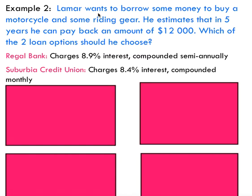For the second example, you want to borrow money to buy a motorcycle and some riding gear, and you estimate that in five years you can pay back $12,000. You've come across two loan opportunities: the first bank charges 8.9% interest compounded semi-annually, and the second charges 8.4% interest compounded monthly. Let's compare which is the better option.